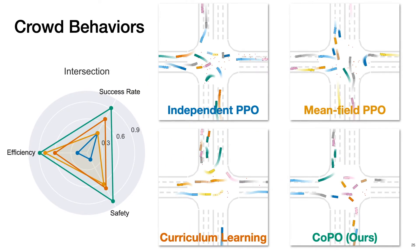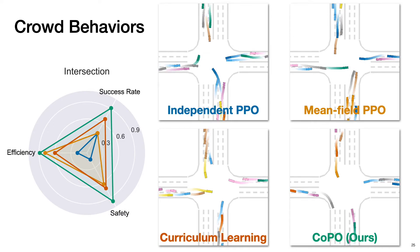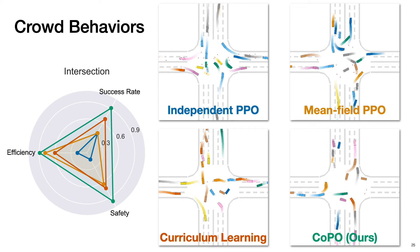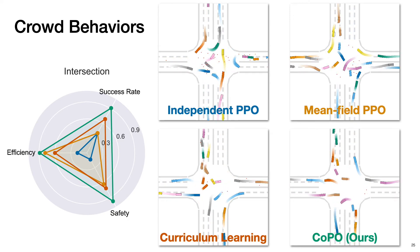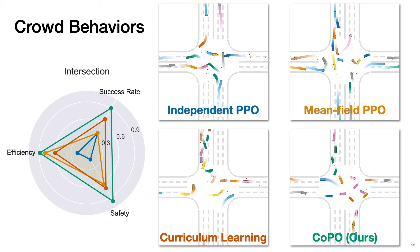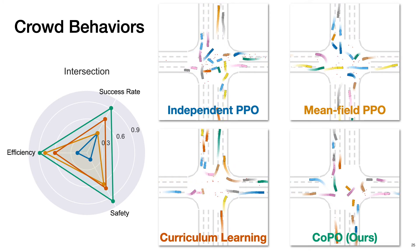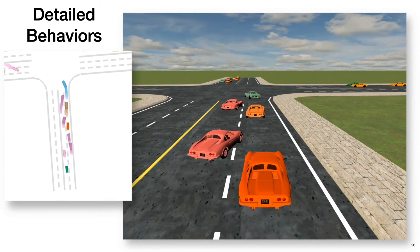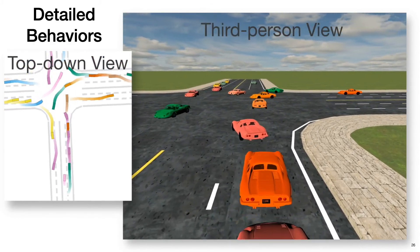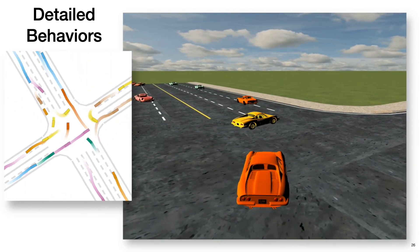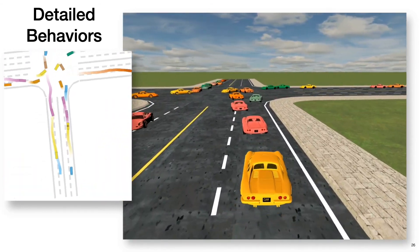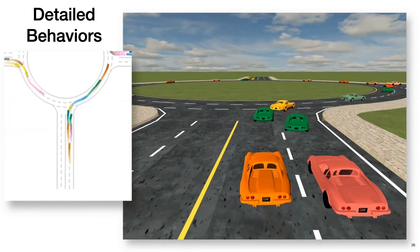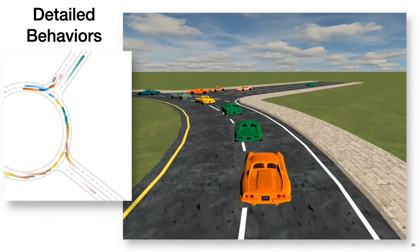We show four top-down view videos of trained populations across different methods. CoPO agents learn much more coordinated behavior compared to independent PPO. Red dots indicate crashes in the environment — there are far fewer red dots in the CoPO population than in independent PPO. In the intersection environment, CoPO agents learn detailed behaviors including queuing, yielding, rushing, and negotiation. In the roundabout environment, CoPO agents also learn cutting and bypassing.